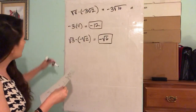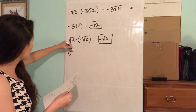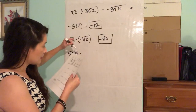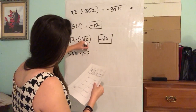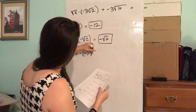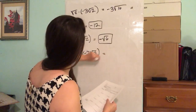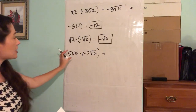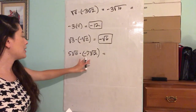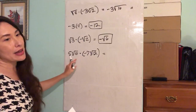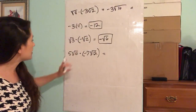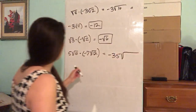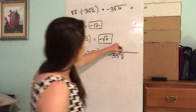How about five square root of ten times negative seven times the square root of 12? Again, we're going to combine the coefficients together, and then we're going to combine the radicals together. Five times negative seven is negative 35. And 10 times 12 is 120.